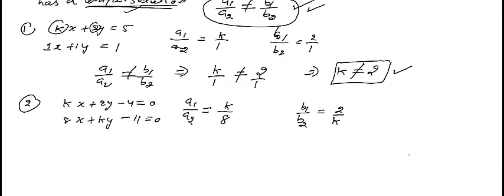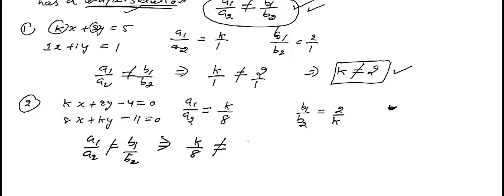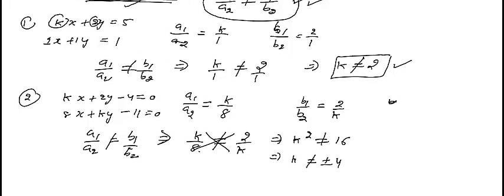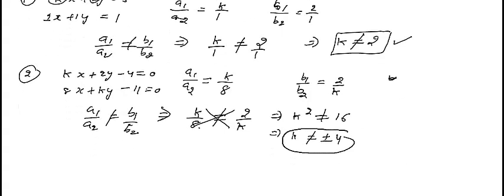The condition for unique solution is A1/A2 not equal to B1/B2, so K/8 is not equal to 2/K. Cross multiplying gives K squared not equal to 16, because 8 times 2 is 16. Therefore K is not equal to plus or minus 4 — K can have any value other than plus 4 and minus 4.